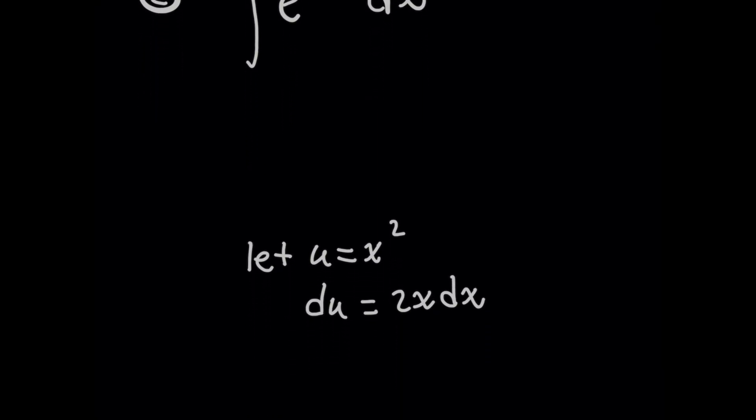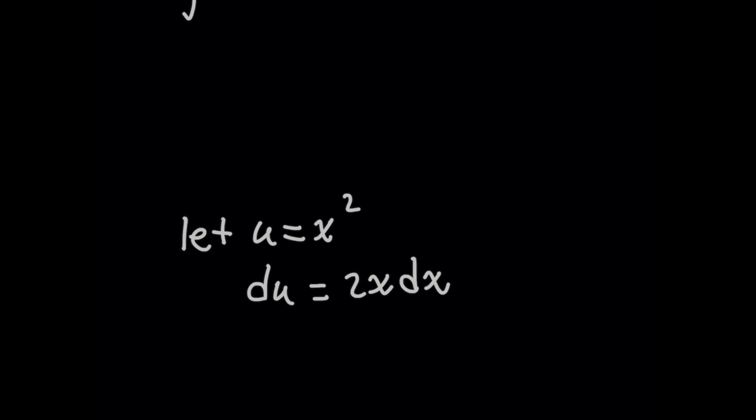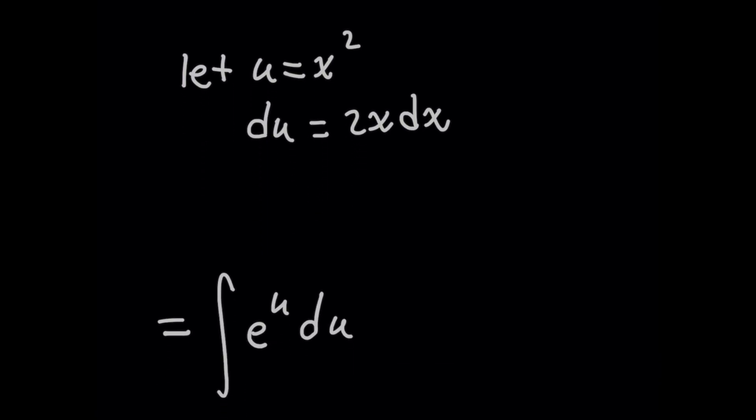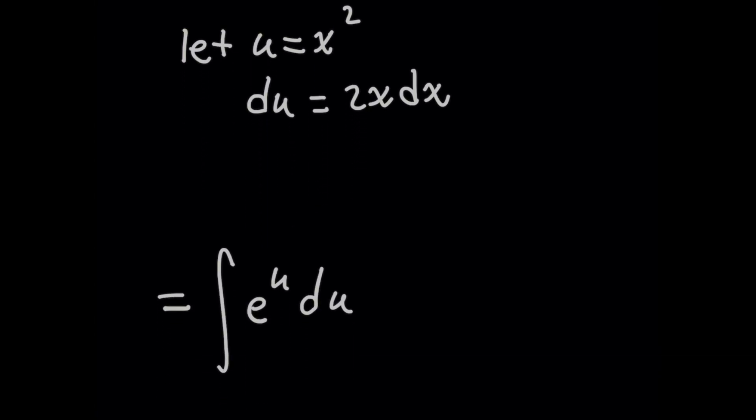And if you don't see it right away, that's okay. But when you let u equal x squared and take the derivative of both sides, you're going to find that du will equal 2x dx. So we can just write this as the integral of e to the u du, right? Well, not so fast.